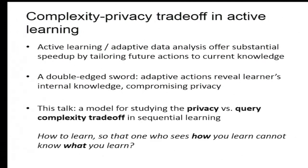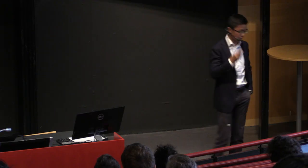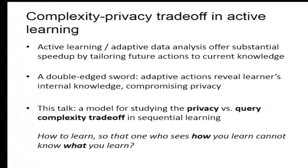So this talk is to look at a model for studying the privacy versus query complexity trade-off in sequential learning. And specifically, we're trying to answer a question of this kind: How can I learn efficiently so that if one sees how I learn, as a learner, they will not know what I'm learning? That's the guiding question of this talk.